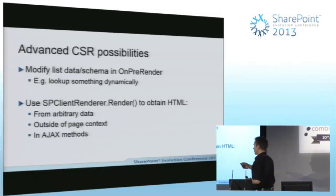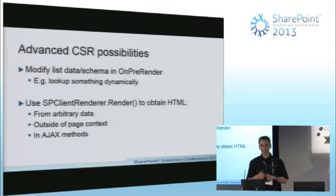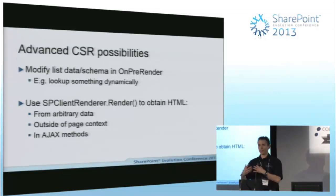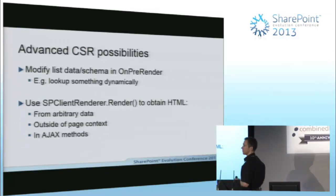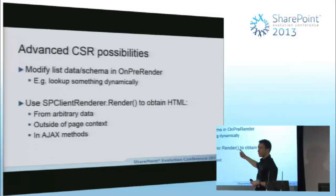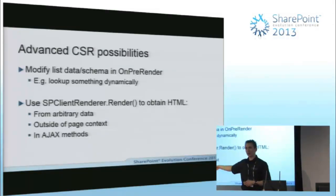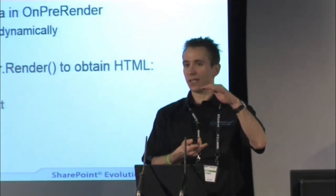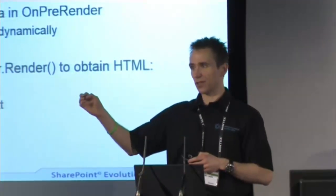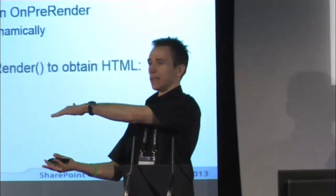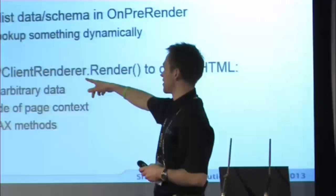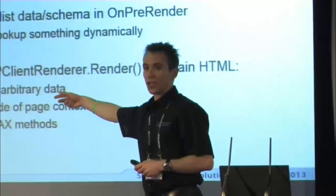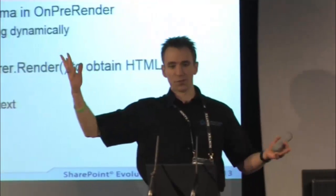There's also another JavaScript object Microsoft provide that lets you get the HTML from a certain list or view after it's been passed through the template, without being in the context of a list. Maybe you're in an AJAX method and you need this HTML output for a certain list to drop into a div — perhaps for jQuery UI tabs. You can even push arbitrary data through it and it will just give you the HTML to do what you like with. Lots of cool possibilities as you start to understand this framework more.